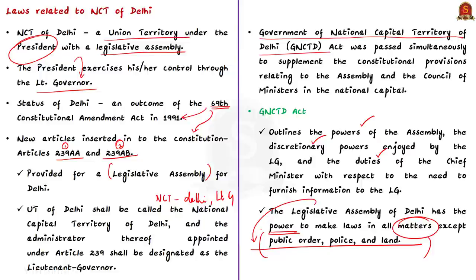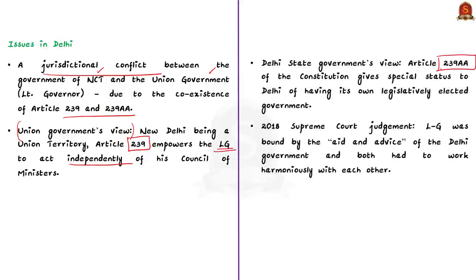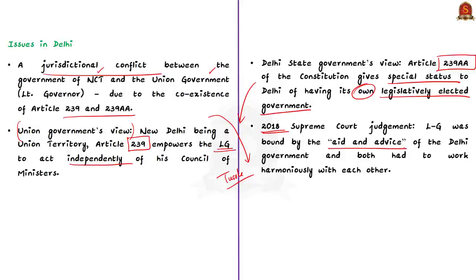Due to the coexistence of Article 239 and Article 239AA, there is a jurisdictional conflict between the government of NCT and the union government's representative, the Lieutenant Governor. The union government held that Article 239 empowers the Lieutenant Governor to act independently of his council of ministers, while the state government of Delhi held that Article 239AA grants special status to Delhi of having its own legislatively elected government. In 2018, the Supreme Court unanimously held that the Lieutenant Governor was bound by the aid and advice of the Delhi government, and that both had to work harmoniously.